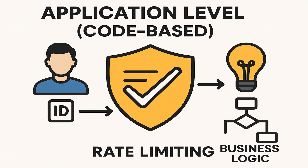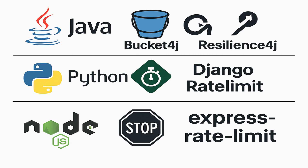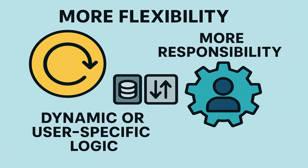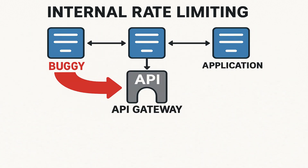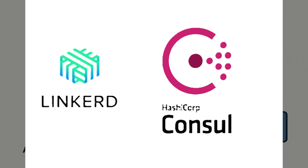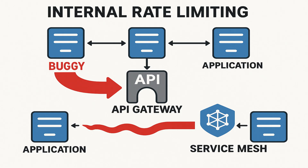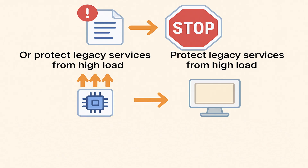Sometimes you want fine-grained control, like rate limiting per user ID or based on business logic. In that case, you can implement it inside your code using libraries — in Java: Bucket4j, Resilience4j; in Python: Django Rate Limit, Flask Limiter; in Node.js: express-rate-limit. This gives more flexibility but also means more responsibility, like storing counters and handling concurrency. It's best used when the logic is dynamic or user-specific and can't be handled at the infrastructure level. For internal services, if you are using a service mesh like Linkerd or Consul, you can apply rate limiting between services at that level to prevent one internal service from flooding another.